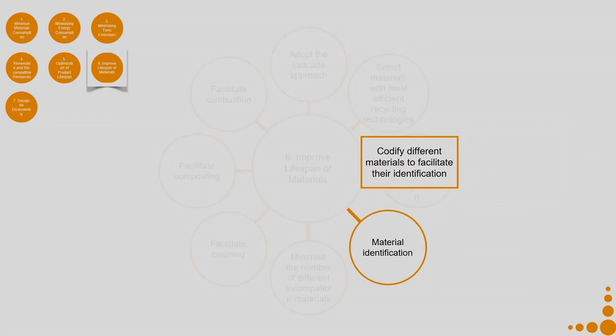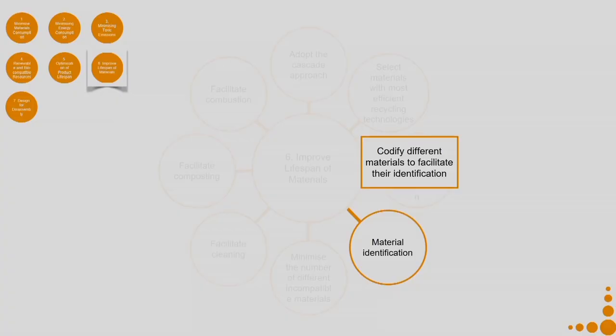Coming to material identification: codify different materials to facilitate their identification — for plastics such codes are already available. Apply appropriate codes and it is always better that the code is built into the product — for example, if it is a plastic product, build the code inside the mould itself so the code does not get erased. If you put the code as a sticker, it is quite likely the sticker goes away and the code is lost. It is better that the code is imprinted onto the product in a manner that it cannot be removed.